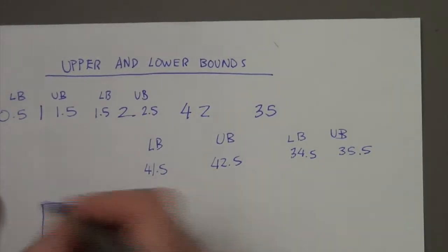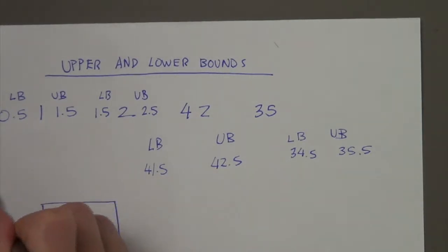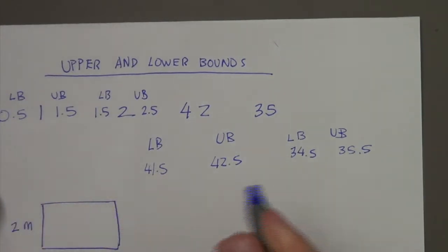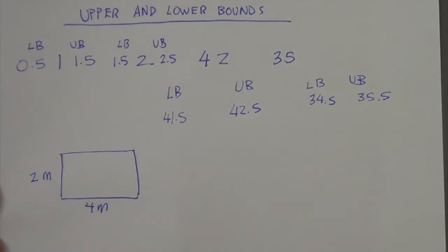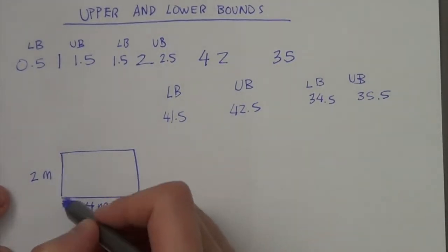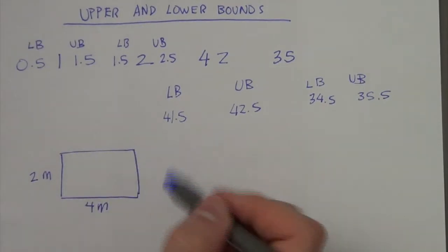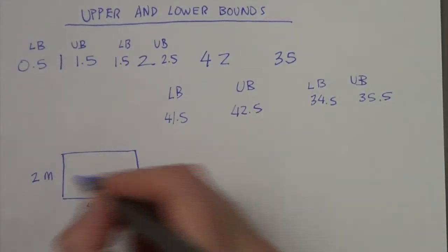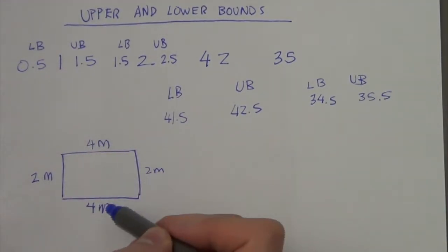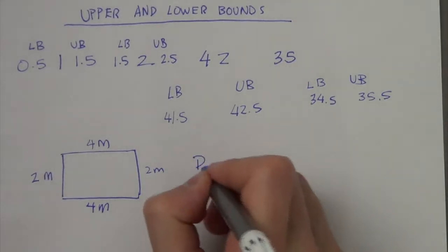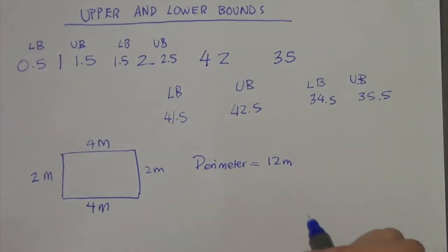We've got a rectangle: 2 meters by 4 meters. The question is: what is the minimum and maximum perimeter? A perimeter is the total length around the shape. So we've got 2 + 2 + 4 + 4, which is 12 meters.